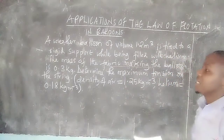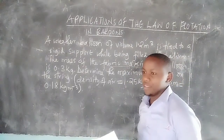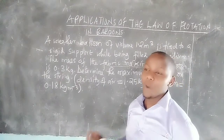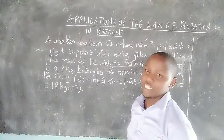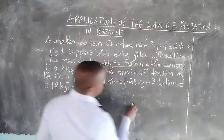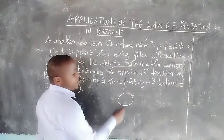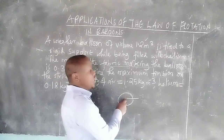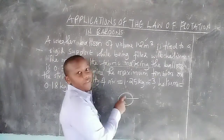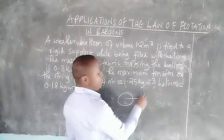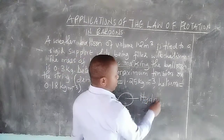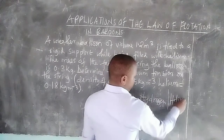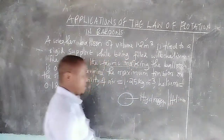Weather balloons are filled with air or gas of a lower density compared to air. We fill them with gases that have a density lower than the density of air. For example, hydrogen is a gas of very low density, and so is helium. These two options are most preferred.